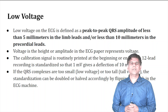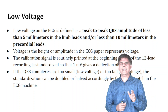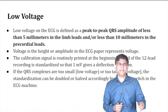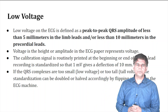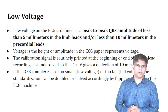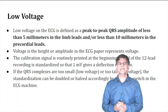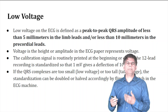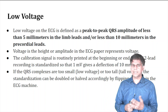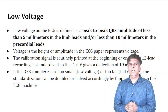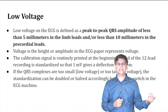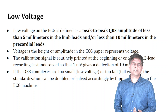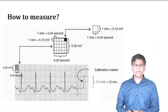The calibration signal is routinely printed at the beginning or end of the 12-lead EKG — you can usually see it on the left side. If the QRS complexes are too small (low voltage) or too tall (high voltage), the standardization can be doubled or halved by flipping a switch on the EKG machine. Always check the calibration on the left side and compare it.